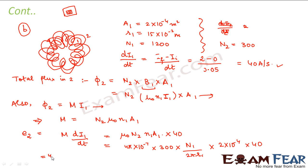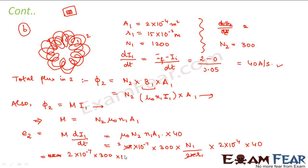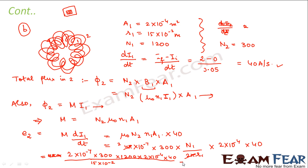The 2π cancels with the 4π, giving 2 × 10⁻⁷. Substituting: 2 × 10⁻⁷ × N₂(300) × N₁(1200) × A₁(2 × 10⁻⁴) × 40, divided by r₁ = 15 × 10⁻². This value comes out to be 0.023 volts — so this would be the EMF induced in the second coil.